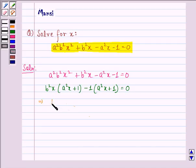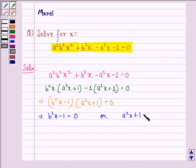This further implies that b square x minus 1 into a square x plus 1 is equal to 0. This implies either b square x minus 1 equals to 0 or a square x plus 1 equals to 0.